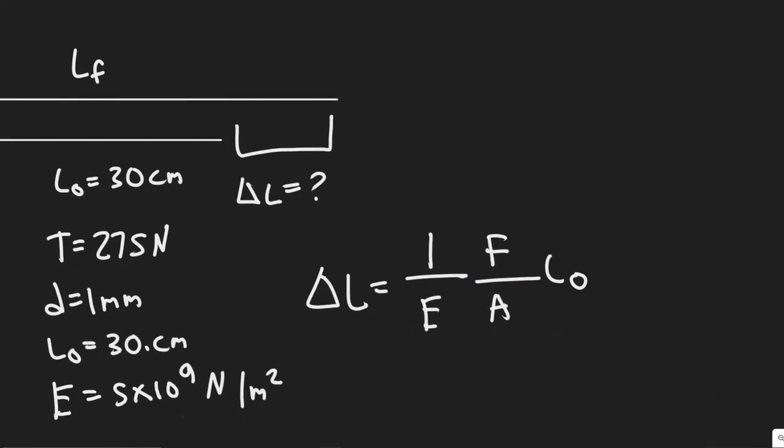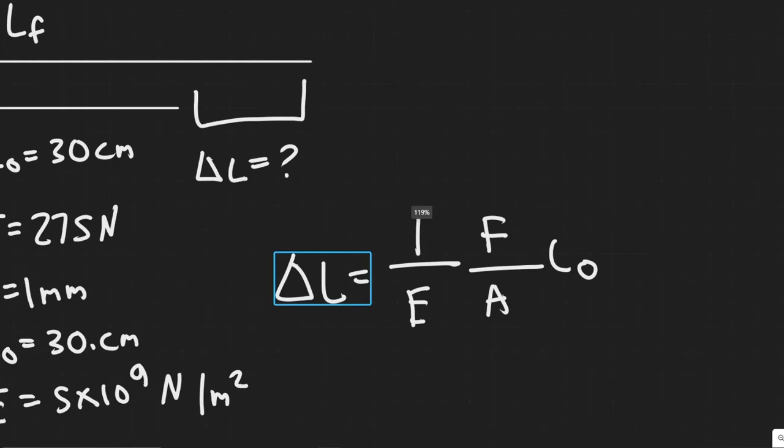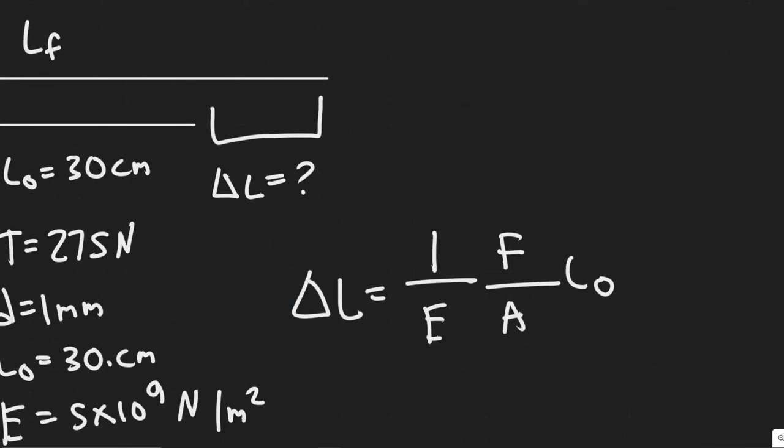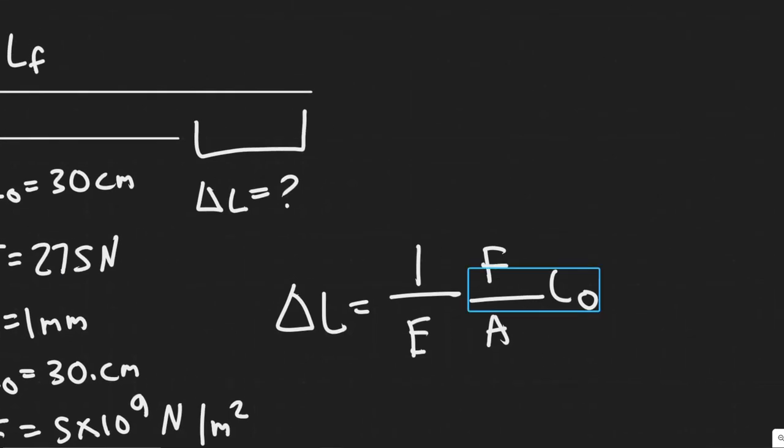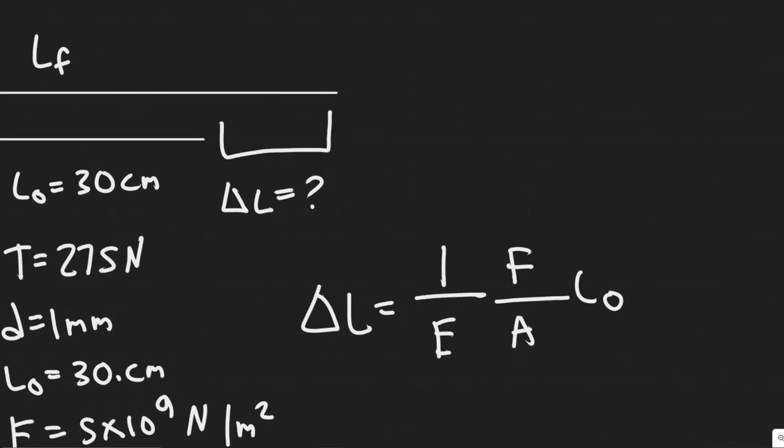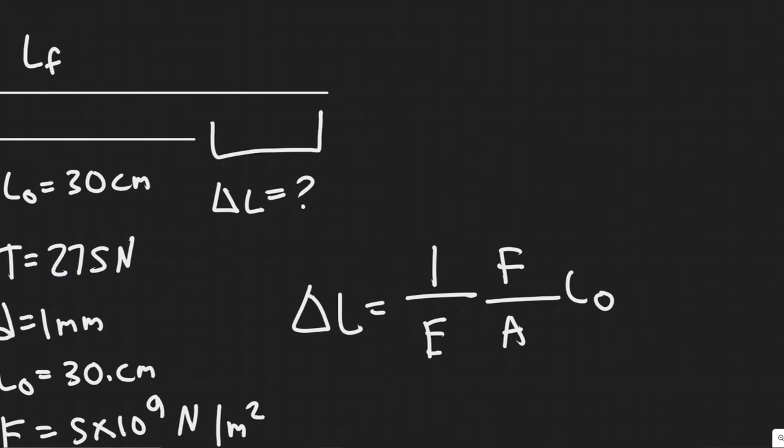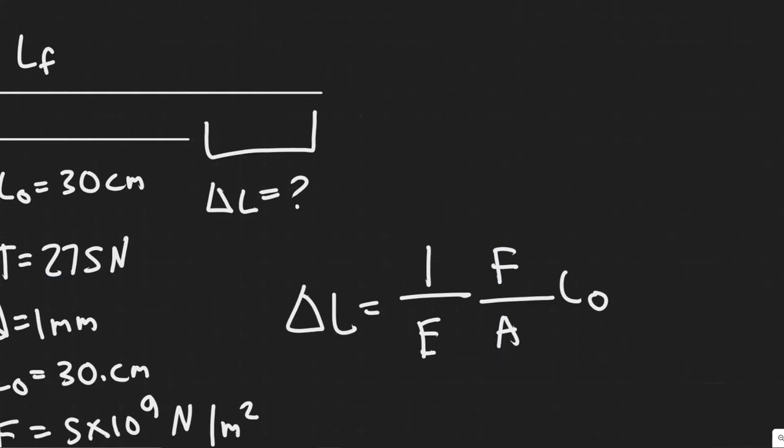And then L0 is just the initial length. So in order to find the change in length from its normal state to the state at which we're applying 275 Newtons of tension, we need the initial length, which we know is 30 centimeters. We need the force, which we're given. It's just the tension.